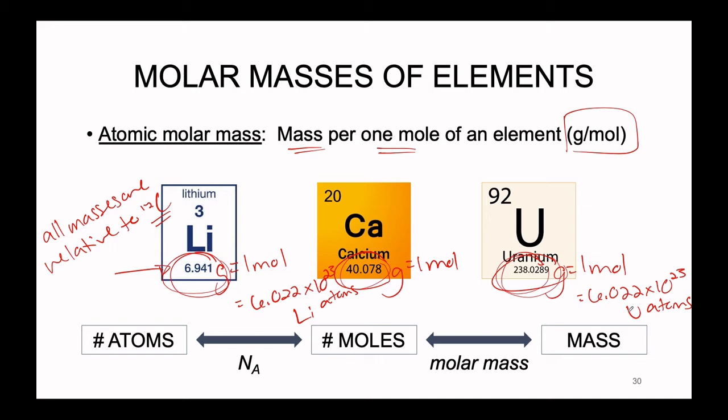So we can use these molar masses — these atomic molar masses — which is the mass of a mole. That's how we can remember what a molar mass is, as opposed to just a straight-up mass. It is the mass pertaining to how many atoms you are working with. We can use the flowchart to interconvert between numbers of atoms, numbers of moles, and the mass of the substance.